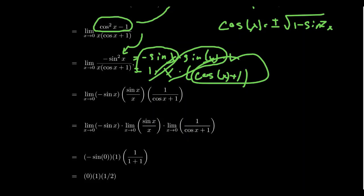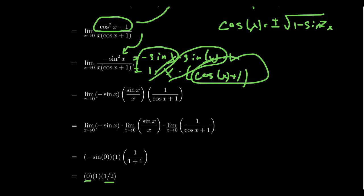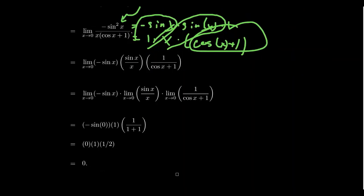The first and last factors have no issues. By continuity, plugging in x equals 0 gives sine of 0, which is 0. For the last factor, plugging in x equals 0 gives cosine of 0, which is 1, so we get 1 over 1 plus 1, which is 1 half. For the middle factor, the limit as x approaches 0 of sine x over x was established by the squeeze theorem to equal 1. So the full product is 0 times 1 times 1 half, but since the sine x over x factor equals 1, we get 0 times 1 times 1 half equals 0, thus finishing the proof.